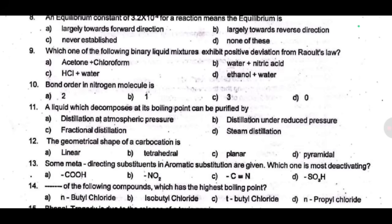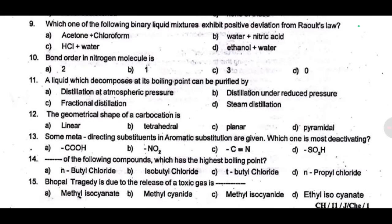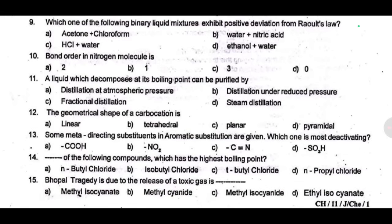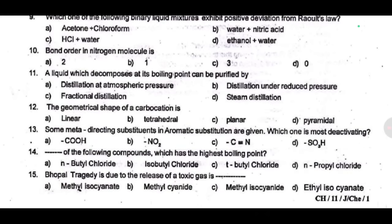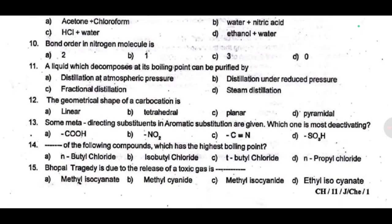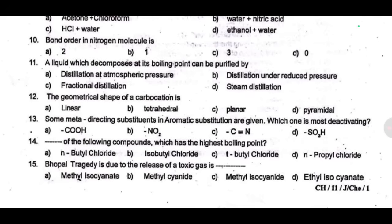Thirteenth one — some meta-directing substituents in aromatic compounds are given; which one is most deactivating? Fourteenth one — of the following compounds, which has the highest boiling point? Fifteenth one — Bhopal tragedy is due to the release of a toxic gas dash.